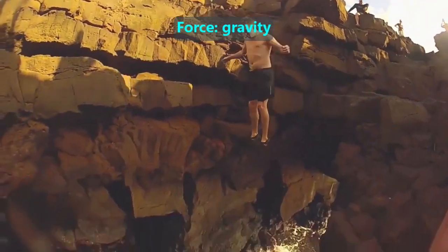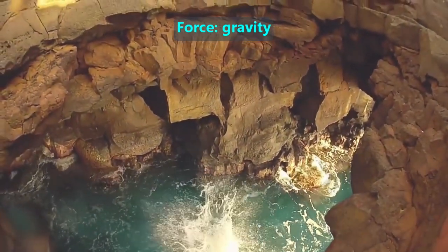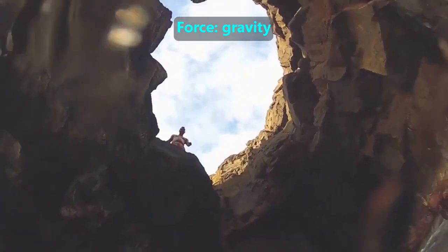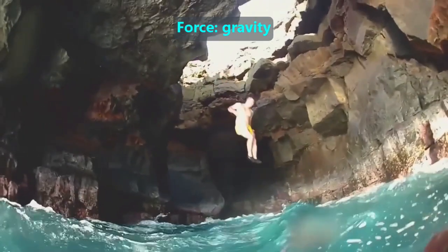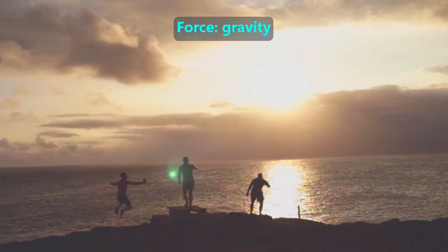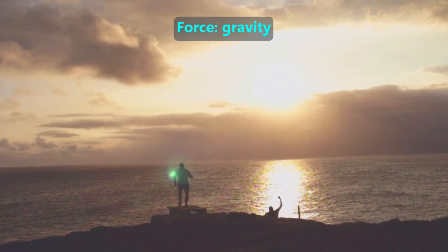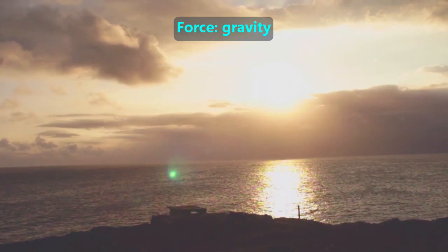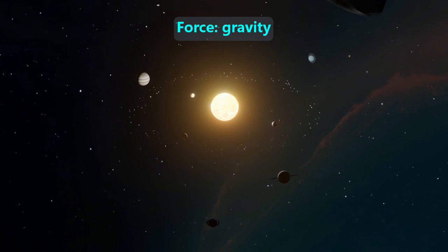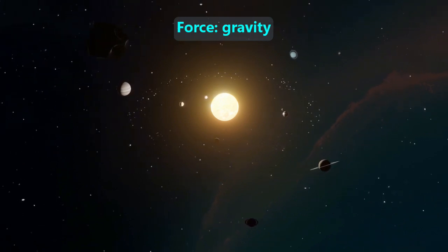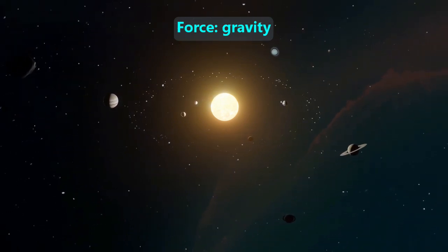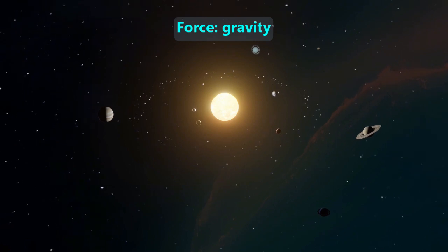The last force is gravity. This is a pulling force, but there is no contact between the force and the object being moved. All people, animals, and objects are affected by gravity, and on Earth the pulling direction is always towards the center of the Earth. Even though there is no contact, gravity can affect objects very far away. Gravity is the force that keeps the planets orbiting the Sun.